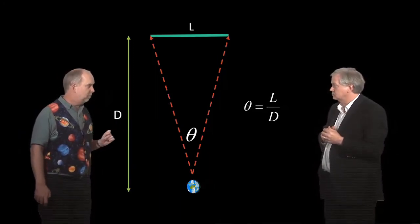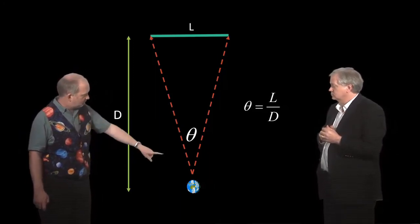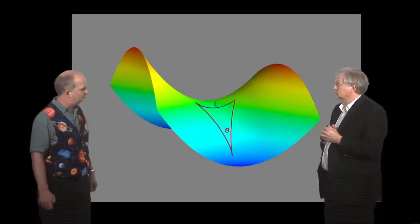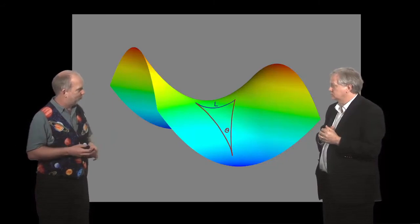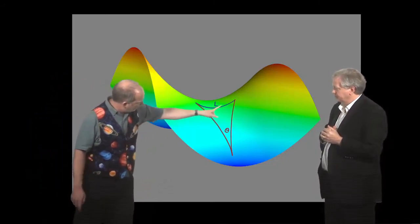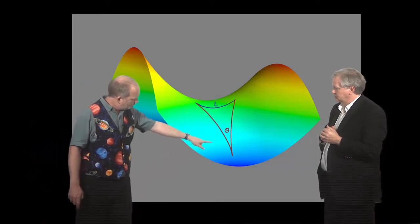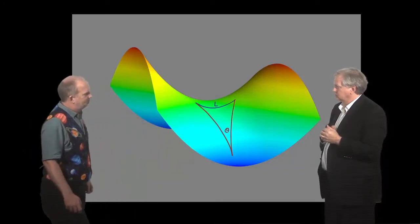However, this turns out to be very sensitive to the geometry of space. So here, let's say theta is just L over D, but what happens if we lived in a saddle-shaped universe? This is the open universe we talked about early on. So here, you've got length L once again, but now the angle's smaller.